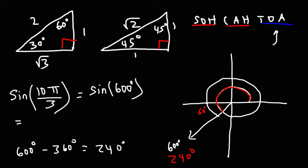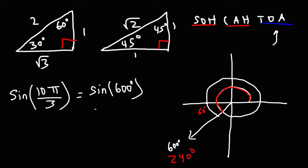For very large angles or negative angles, keep subtracting or adding 360 until the angle is between 0 and 360. For example, cosine of negative 800: add 360 to get negative 440, add again to get negative 80, add once more to get 280. So 280 is the angle you would use — these are coterminal angles and yield the same value.